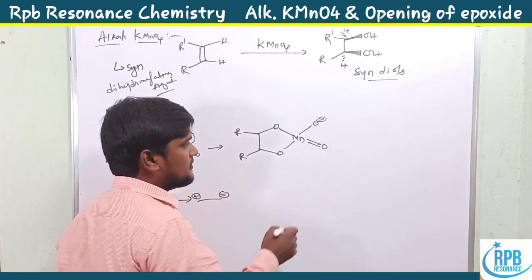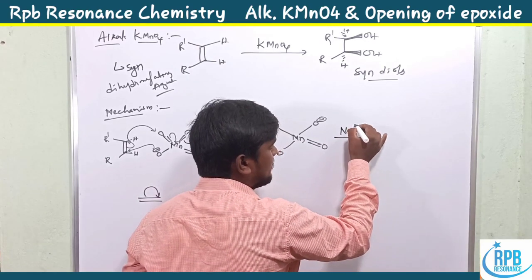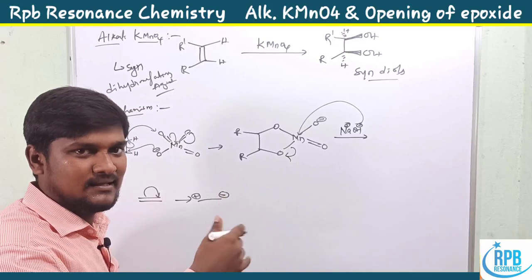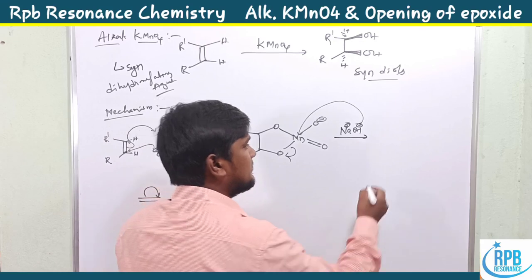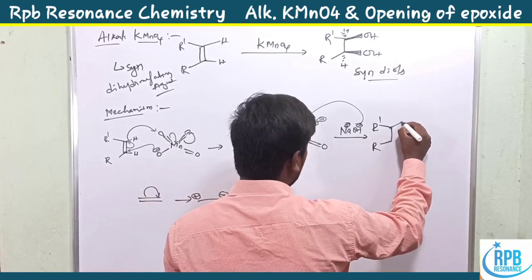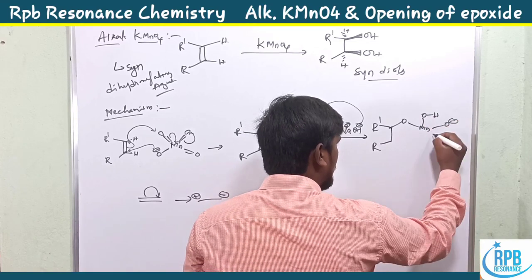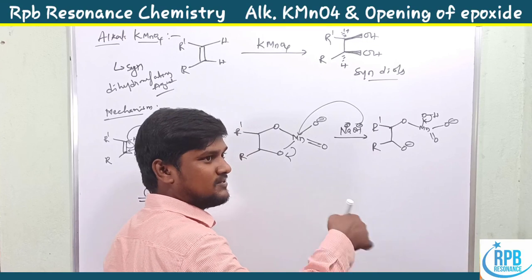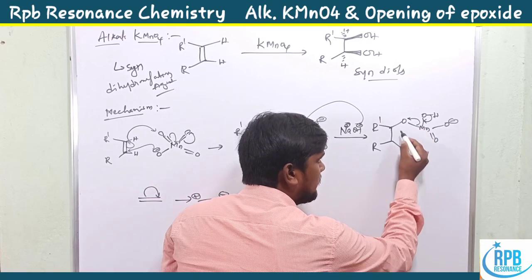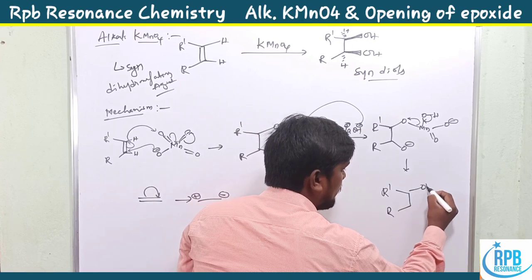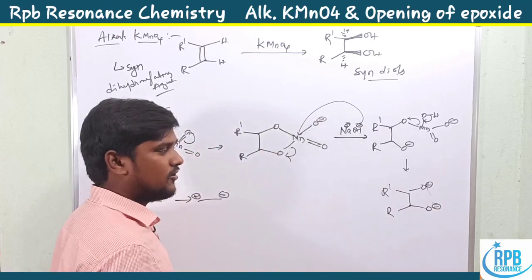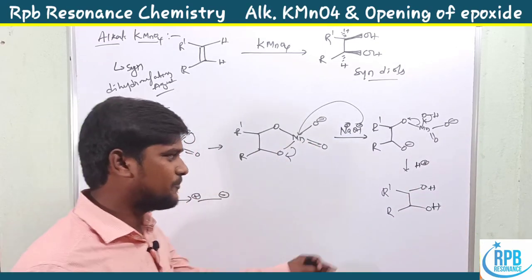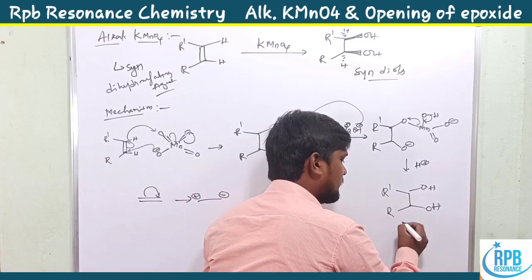In the presence of NaOH — a basic medium — the base attacks the manganese ester, cleaving one of the manganese-oxygen bonds. After hydrolysis and protonation (using H⁺ from acidic workup or water), the O⁻ groups become OH groups. The result is formation of the dihydroxyl group — the diol product.